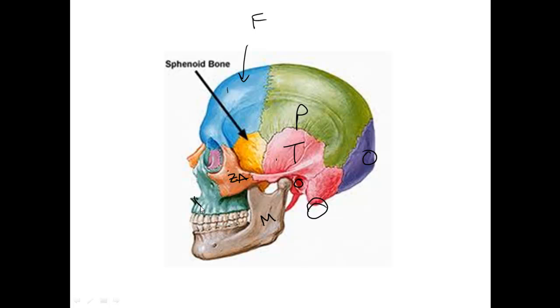The mandible, the maxilla, the nasal bone. Inside there are the conchae and the vomer bone. Here is the lacrimal bone and the ethmoid bone.